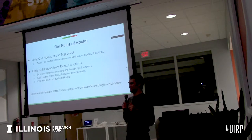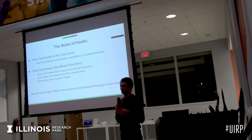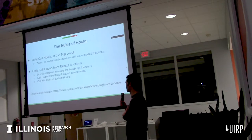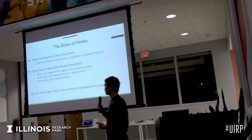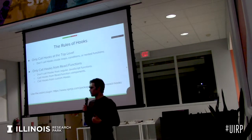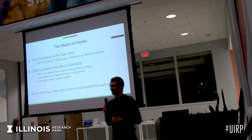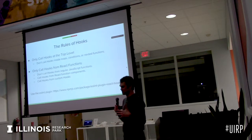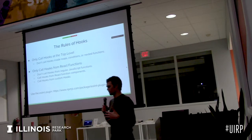It can turn on you in very unexpected ways, so just don't do it. It's easy enough to just declare them all in one way every time. The second rule is only call hooks from React functions, and that way the runtime can properly hook into them and figure out what's going on.